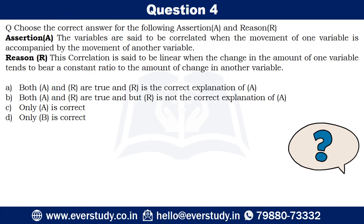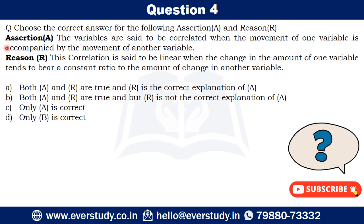Question four: choose the correct answer for the following assertion and reason. Assertion: variables are said to be correlated when the movement of one variable is accompanied by the movement of another variable. Reason: correlation is said to be linear when the change in the amount of one variable tends to be at a constant ratio to the amount of change in another variable. Write your answer.